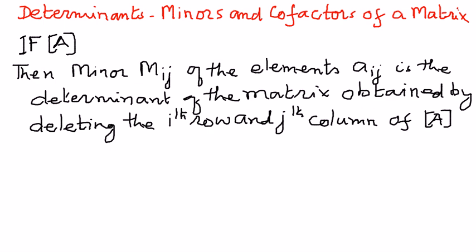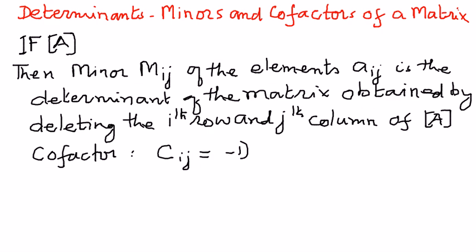Let me define the cofactors as well, and then we'll go back and explain minors and cofactors with an example. The cofactor is represented as C_ij, and the formula for that is negative 1 raised to the power of i plus j, times M_ij, where M_ij is the minor of element A_ij.